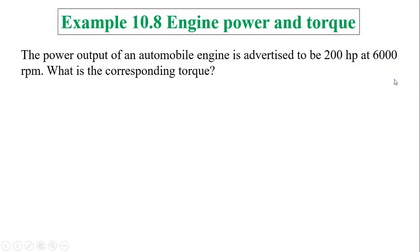Let's take a look at this example. The power output of an automobile engine is advertised to be 200 horsepower at 6,000 rpm. What is the corresponding torque? We know power is 200 horsepower and omega is 6,000 rpm. The corresponding torque is P divided by omega. We just have to make sure we use the standard units. The horsepower has to be changed into watts, and rpm has to change into radians per second.